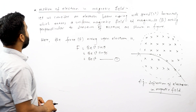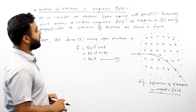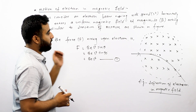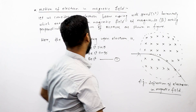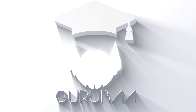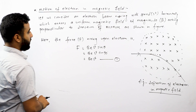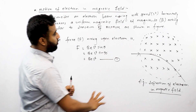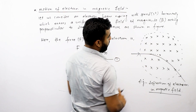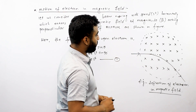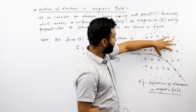After an electric field, the motion of an electron in a magnetic field is considered. Here is the magnetic field. The electron's motion is shown.